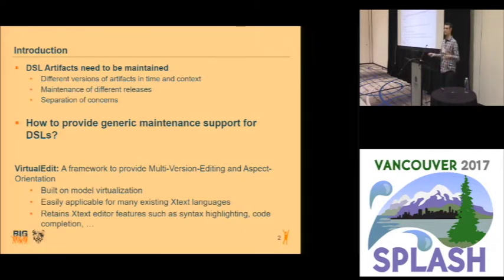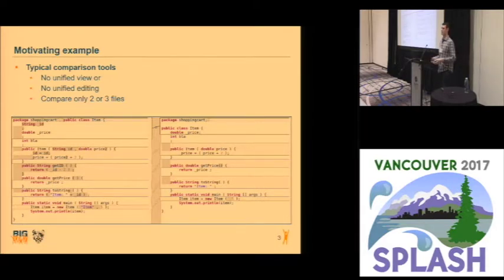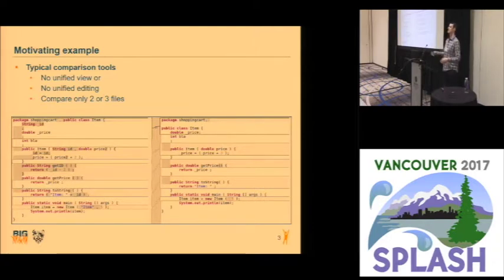It's built on model virtualization to be able to easily build a union of multiple documents. Currently, if you have a text-based artifact, you might use usual versioning tools for maintenance, for example Git or other comparison tools. However, they either do not provide a unified view — you have two windows where you see the two documents separated and cannot edit both at the same time — or they do provide a unified view such as a simple merged view where you can see which lines have been added or removed, but then you cannot edit it anymore. Also, they typically only compare two or three files and not a large amount of files.